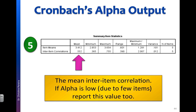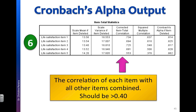Our next table is the summary item statistics, where we have the item means and inter-item correlations. This shows the mean for all items in your scale as well as the minimum, maximum, and range — which is the maximum minus the minimum value — plus the variance and the number of items. We already know there are five items in the scale. Julie Pallant suggests that if you have a low Cronbach's Alpha because you have few items, report the inter-item correlation here, which is 0.552. If you have a high Cronbach's Alpha, you don't need to worry about it, but if your value is below 0.7 or below 0.5 with few items, do report the inter-item correlation.